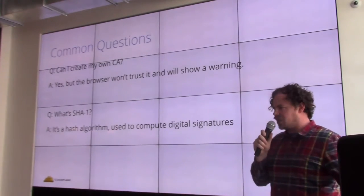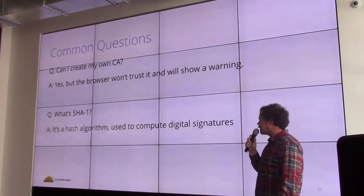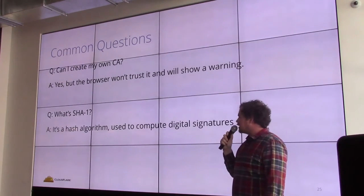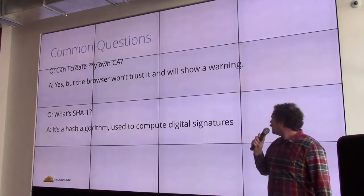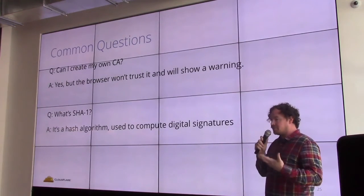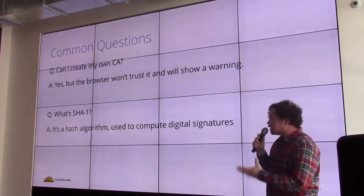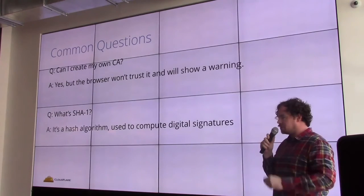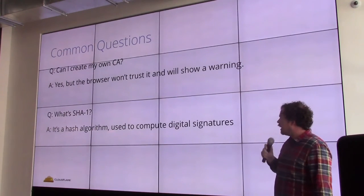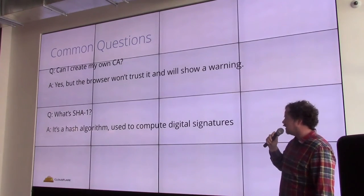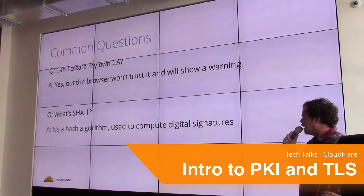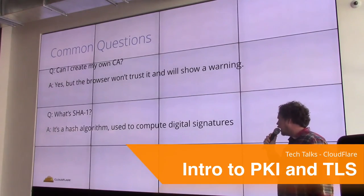Some basic common questions before I open this up. This is a short presentation, and I thought it would be nice to have a conversation after. Question: can I create my own CA? Somebody asked me this yesterday — Taren — he said I want to make my own CA. And you can do that. You can create your own CA, but without getting it into the browser trust store, it's not going to be trusted by a browser. But you can use it for, say, if you have two services and you want them to talk to each other — you can use your own internal CA. This is something we do at Cloudflare — a CA for internal services. Another question that has come up is: what is SHA-1 or SHA-2? This is just a component of the digital signature algorithm — one of many components.